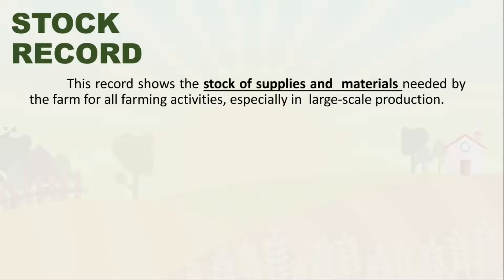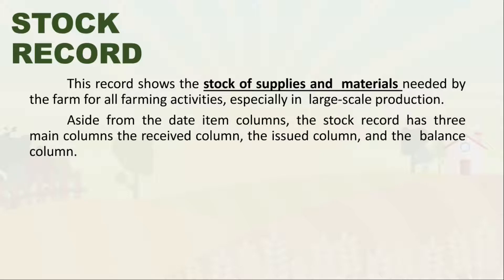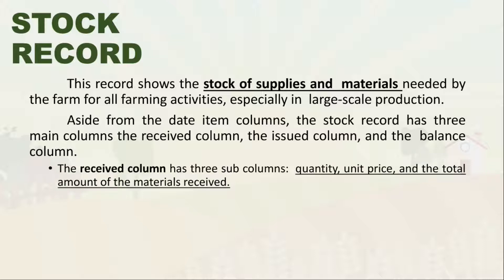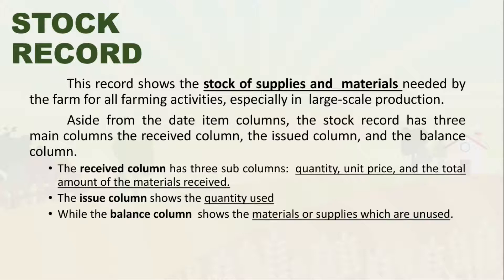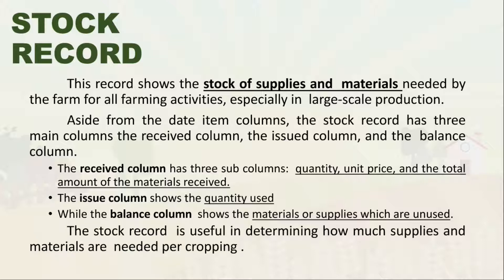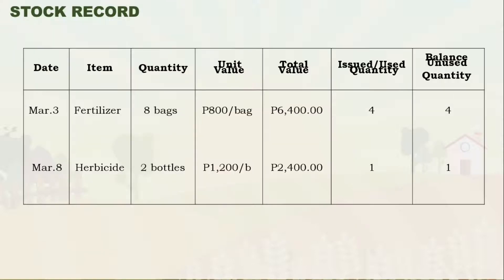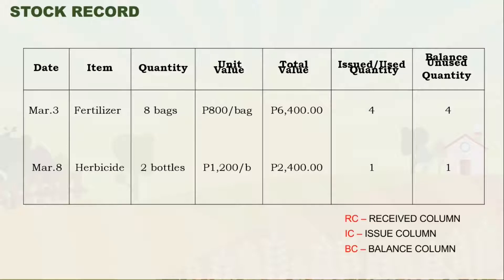Next is the stock record. The stock record shows the stock of supplies and materials needed by the farm in all farming activities. Aside from the date and item columns, the stock record has three main columns: the received column, which shows the quantity, unit price, and total amount of materials received; the issued column, which shows the quantity used; and the balanced column, which shows the materials or supplies that are unused. The stock record is helpful in determining how much supplies and materials are needed per crop.